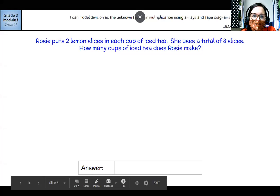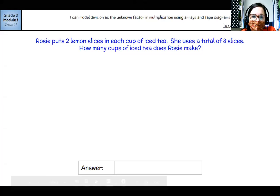All right, Rosie puts two lemon slices in each cup of iced tea. She uses a total of eight slices. How many cups of iced tea does Rosie make?